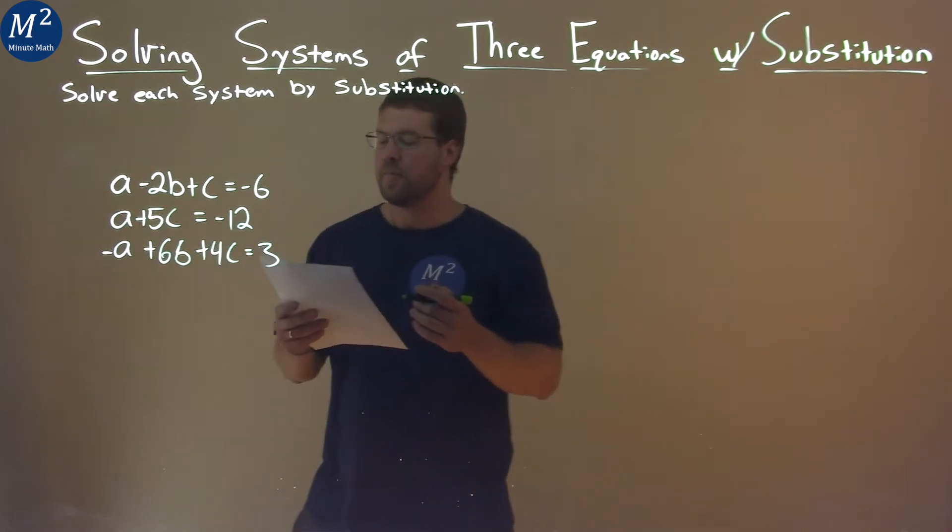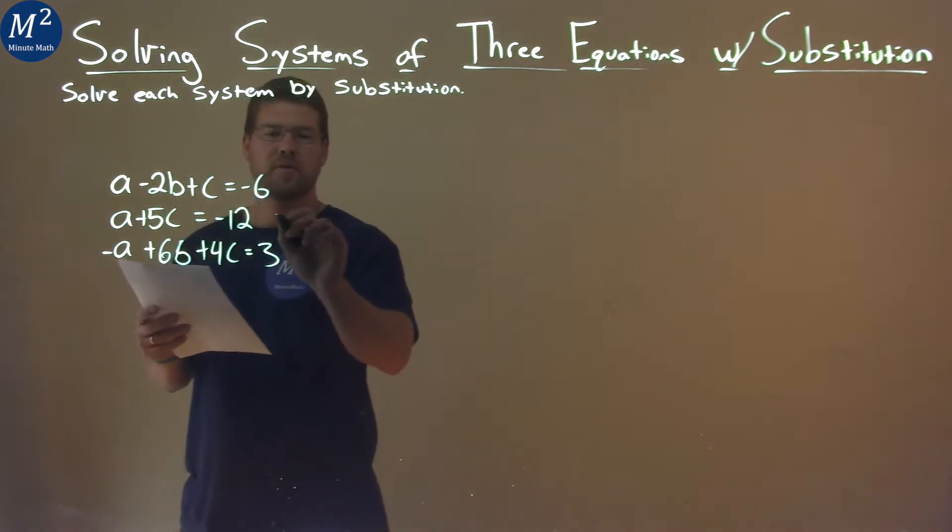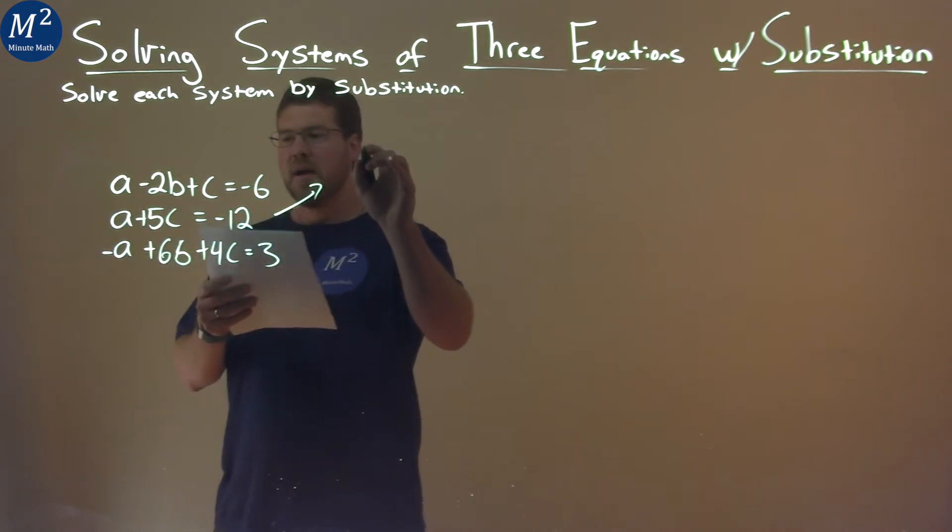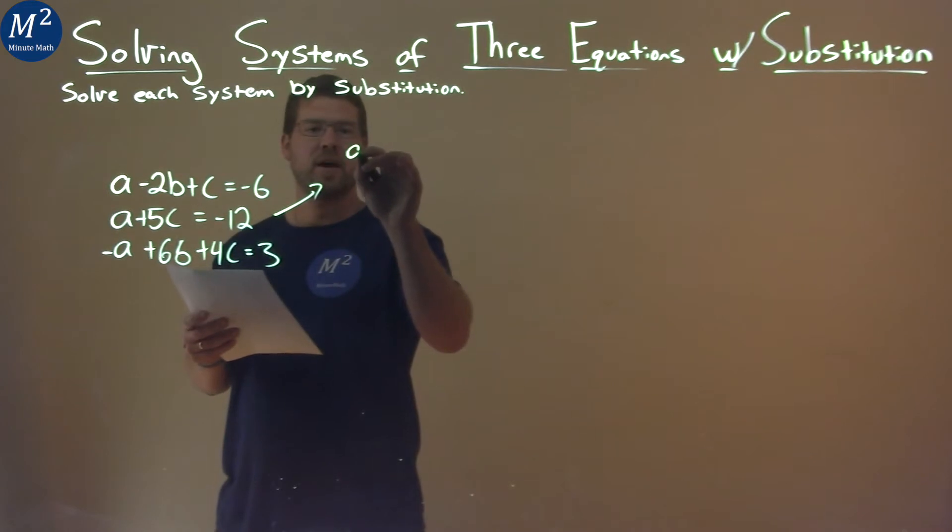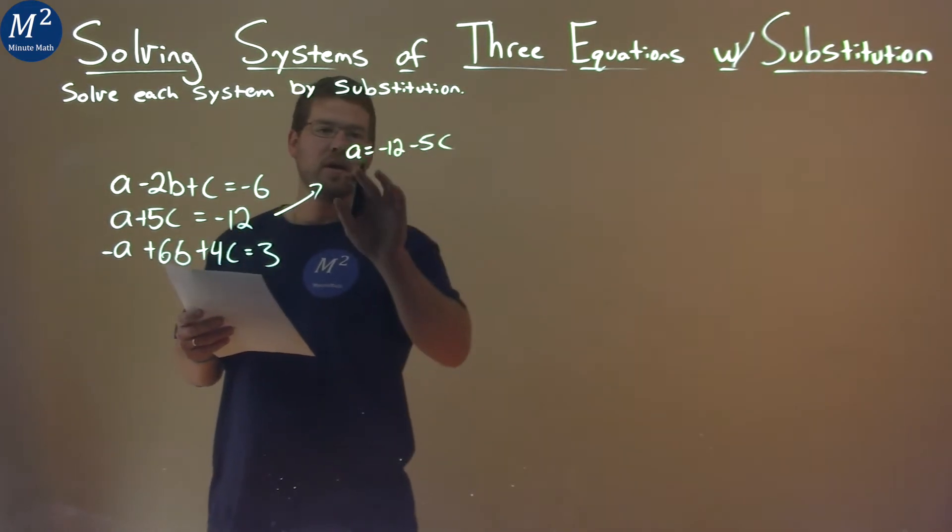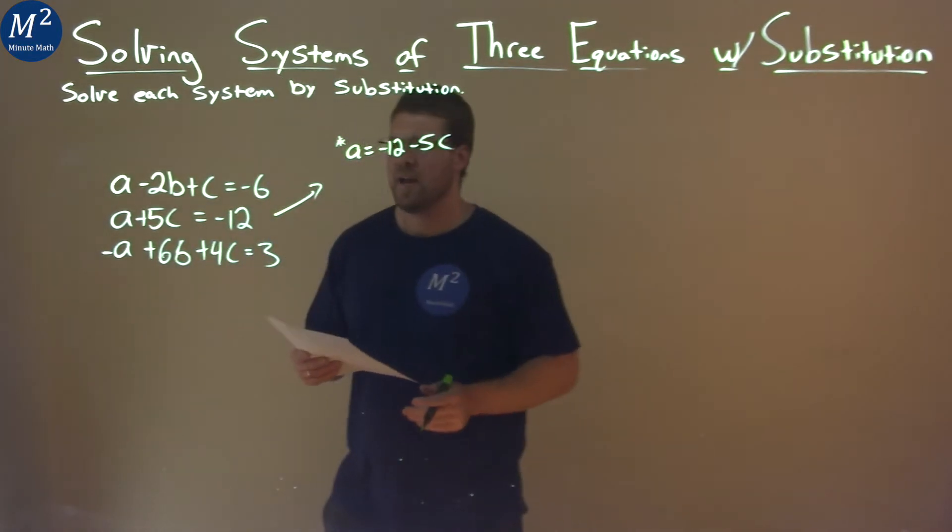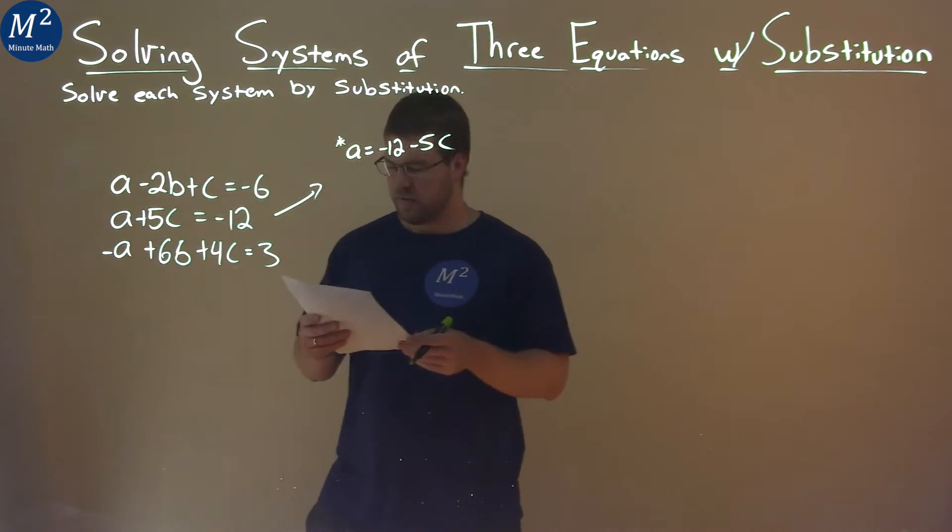Well, first thing I want to do, I'll notice the second equation, I can quickly write that to have A by itself. And so, by subtracting 5C, I have A equals negative 12 minus 5C. So, just kind of note that to myself here, quickly that I can get A by itself, and it's equal to negative 12 minus 5C.